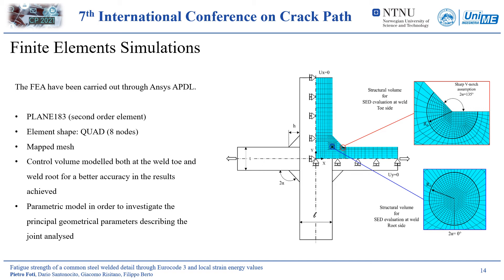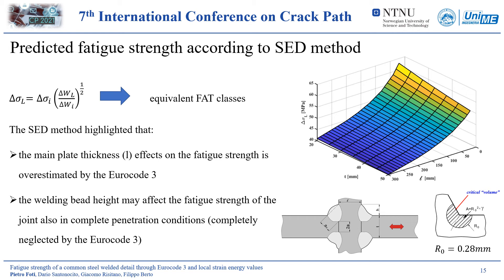For the purpose of this study, a finite element model has been created through ANSYS APDL software. The element used was a second-order element, while the discretization in the model has been determined in order to have the control volume modeled both at the weld toe and root, in order to ensure an error as low as possible. Different numerical simulations have been performed changing the main geometrical parameters describing the joint. The fatigue strength of the welded details considered have been studied considering a control volume radius of 0.28 mm, and the critical values of strain energy density have been converted into equivalent FAT classes according to the relationship of this method.